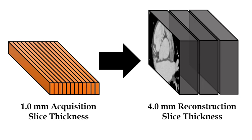The acquisition thickness is really just the thickness of the detector rows, but the reconstruction slice thickness is the thickness of the images that we see on the screen. For example, a technologist can set a scan to acquire the data with one millimeter slices — that would be one millimeter detector rows — but he or she could also choose to reconstruct the same data to be displayed with four millimeter slices.